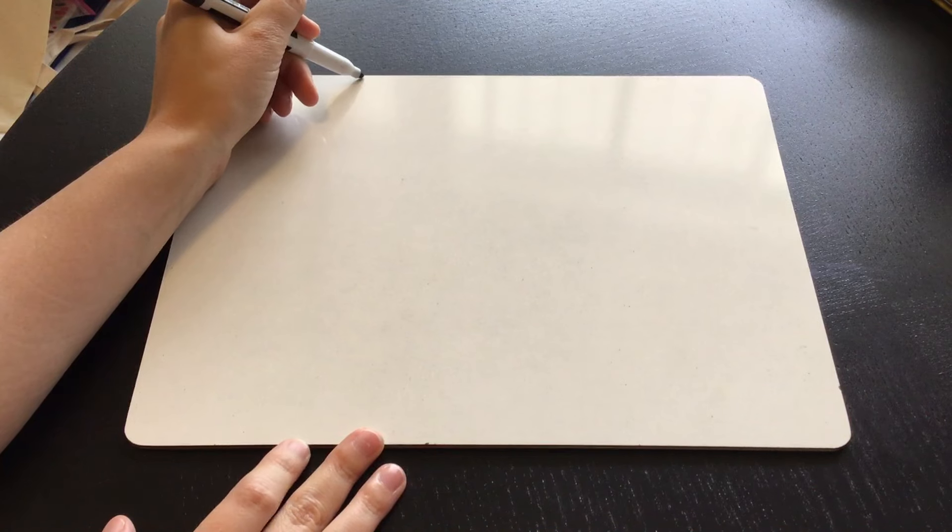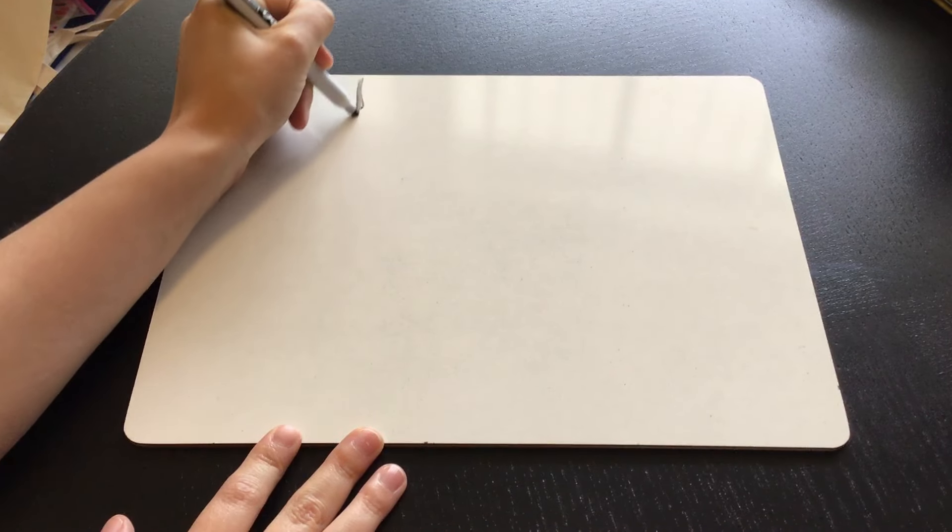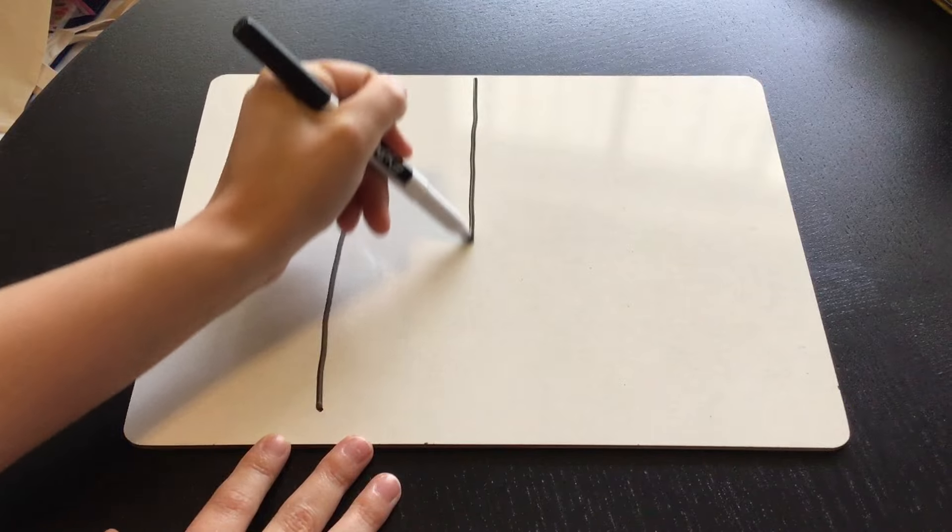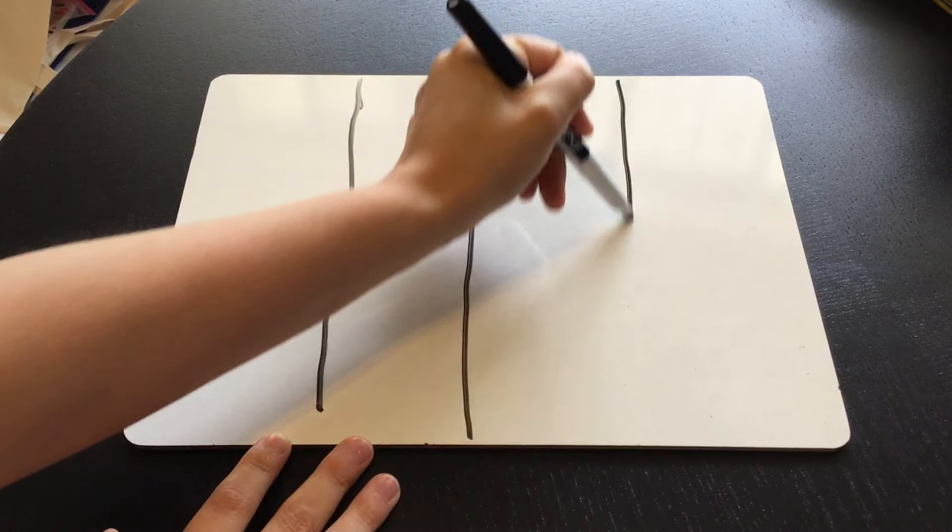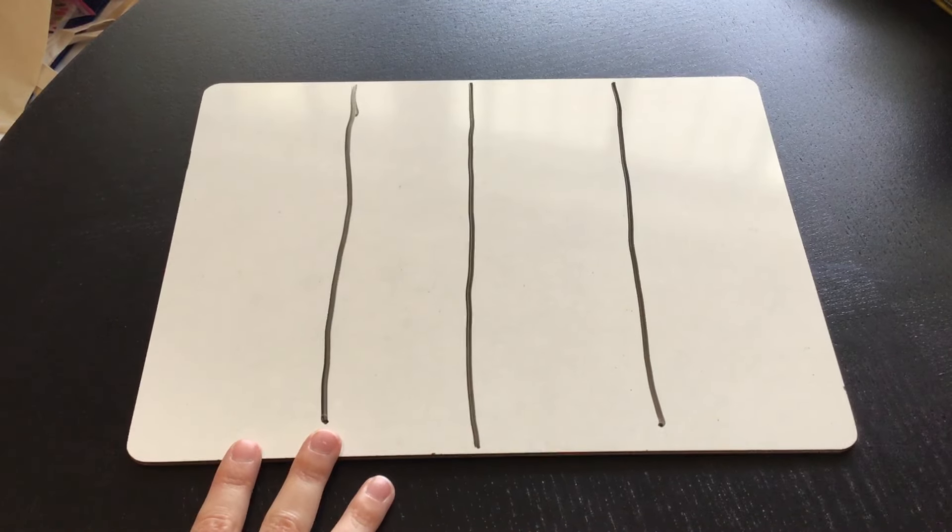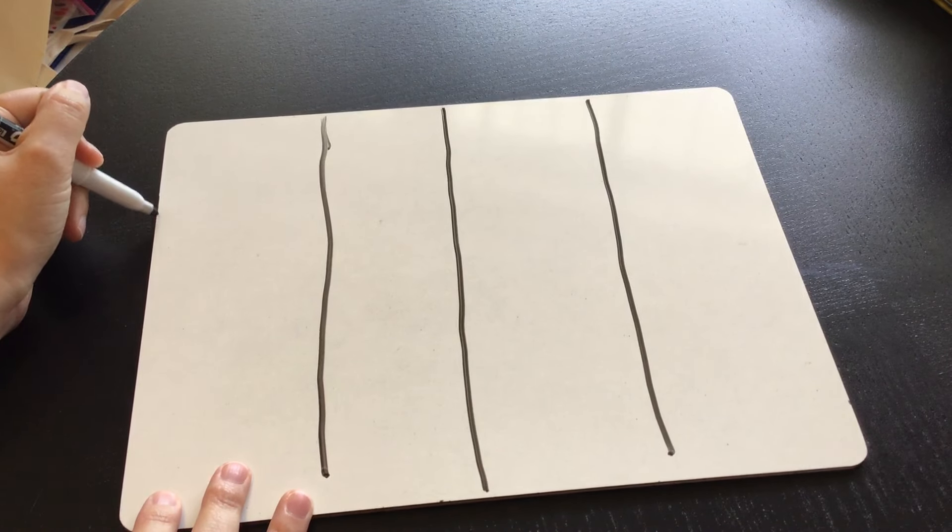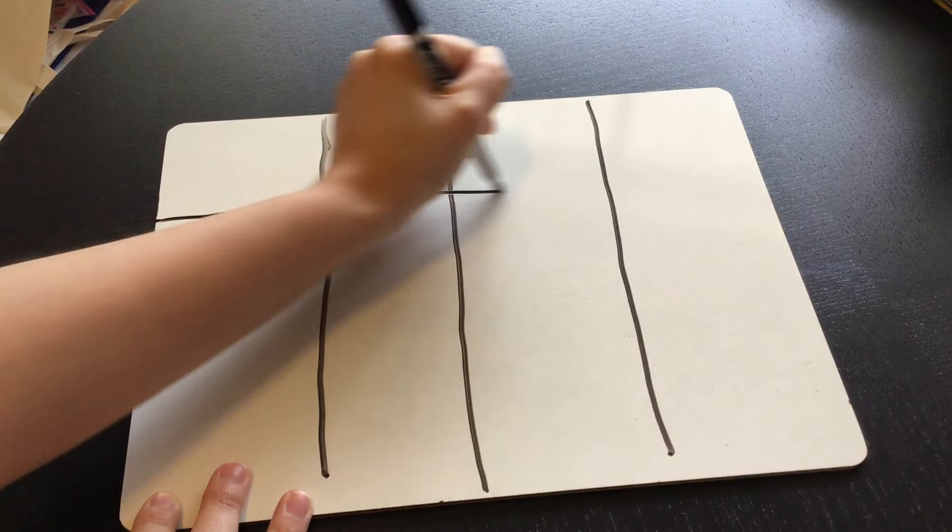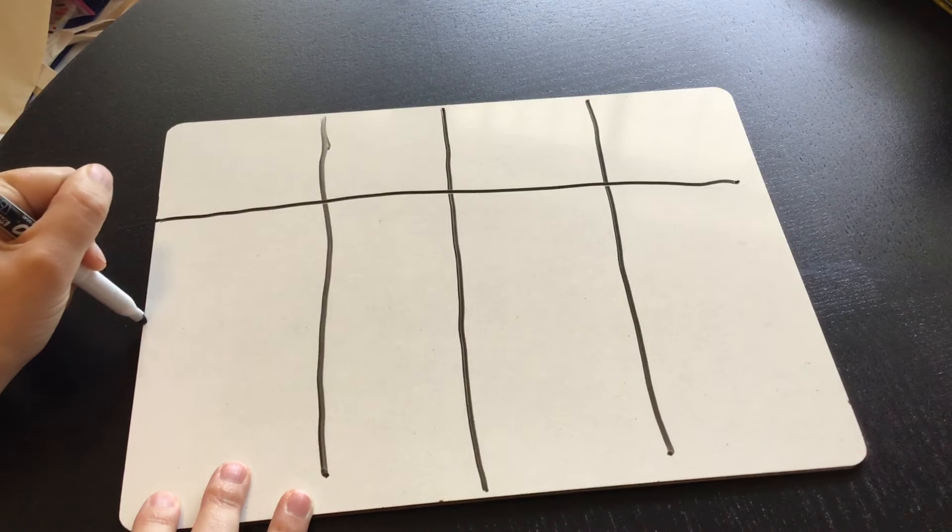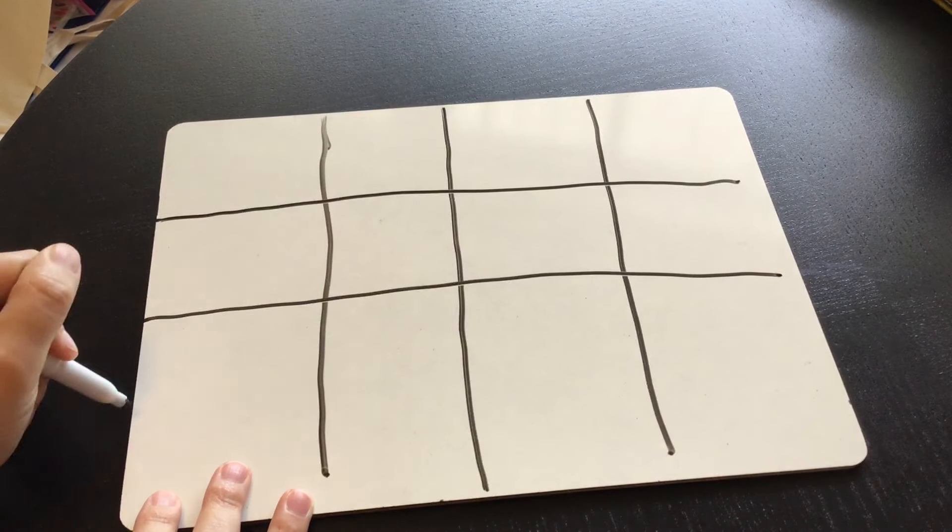So first I need to draw three lines down. One, two, three, and then I need to draw three lines across. One, two, three.